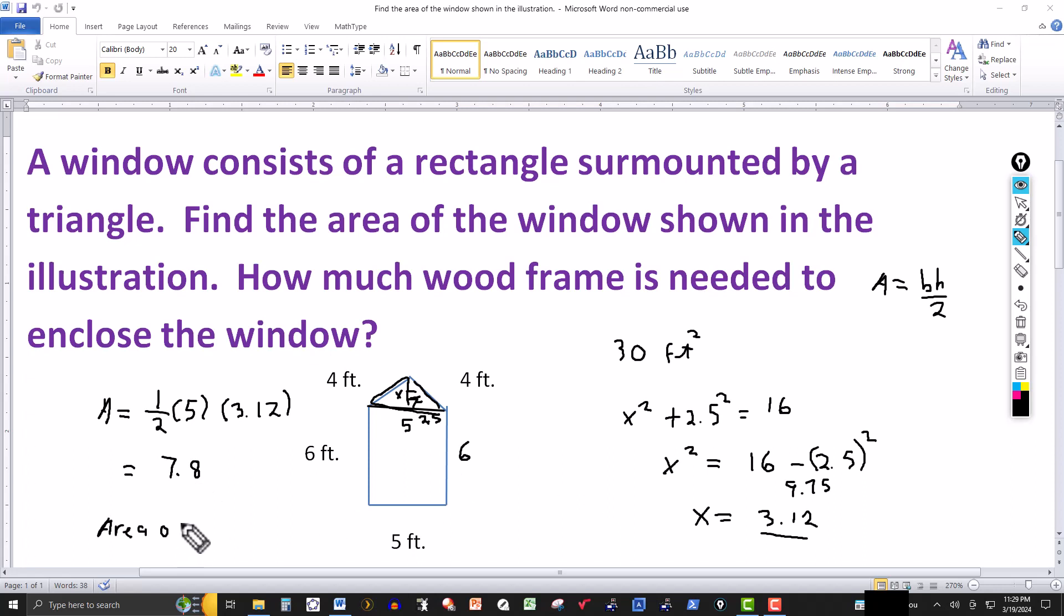That means that the area of the window is going to equal to obviously the area of the rectangle, which is 30 square feet, plus the area of the triangle. So this would be 37. 30 and the 7.8. 37.8 square feet.